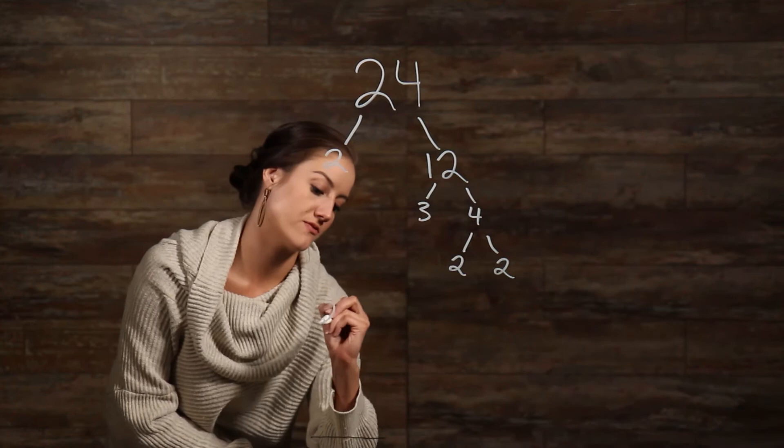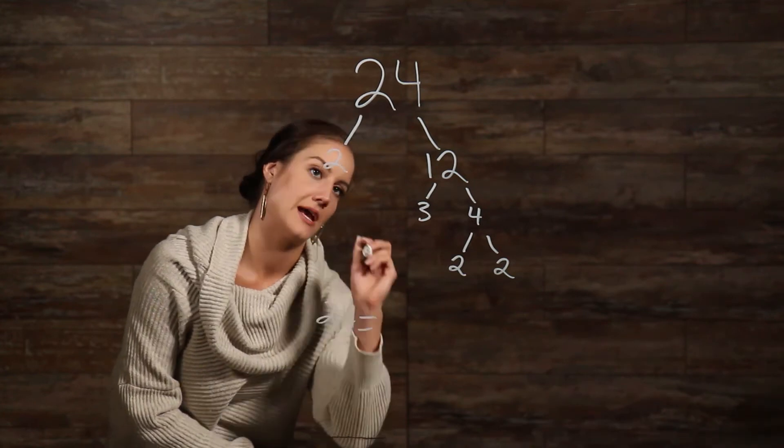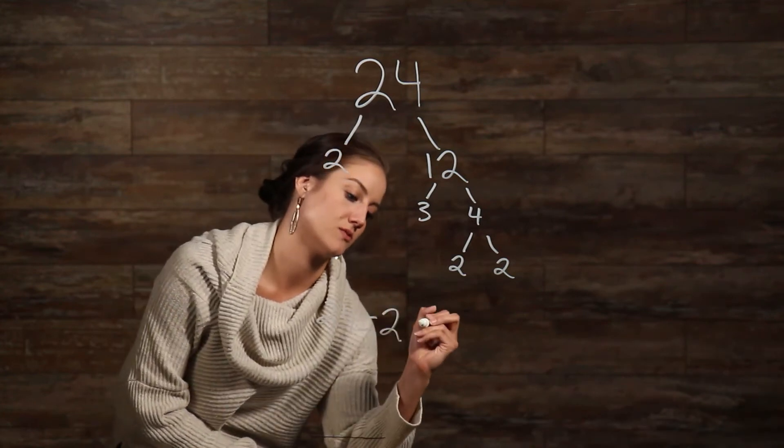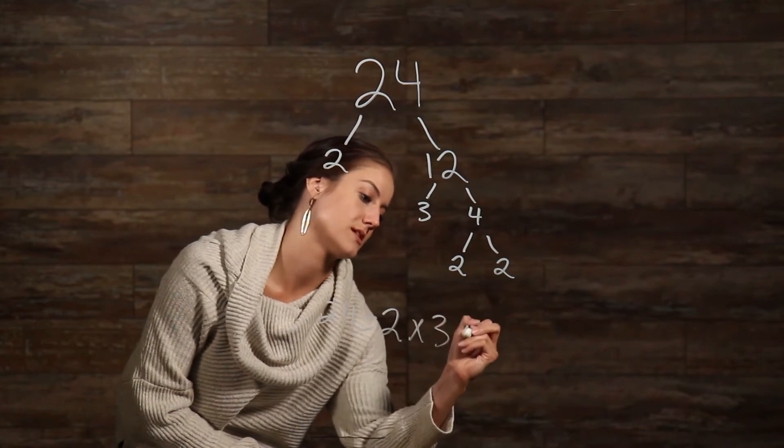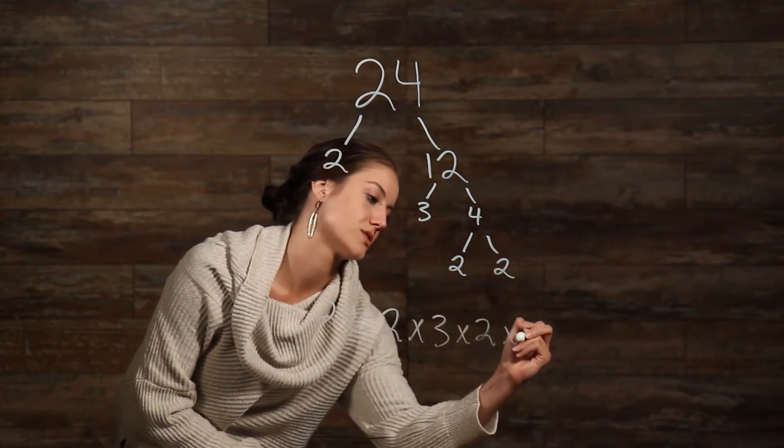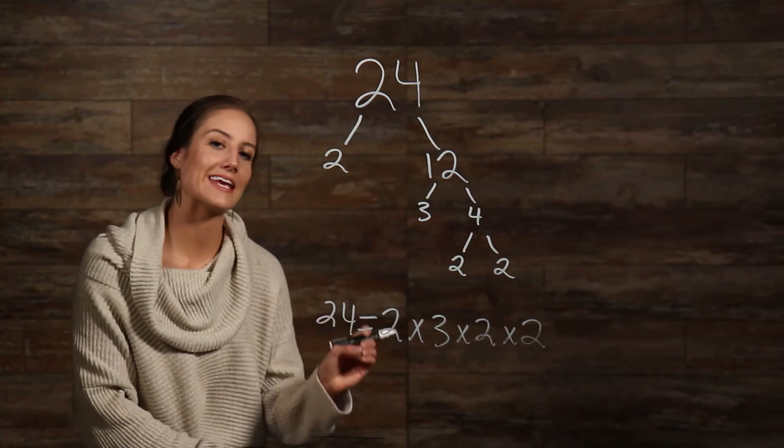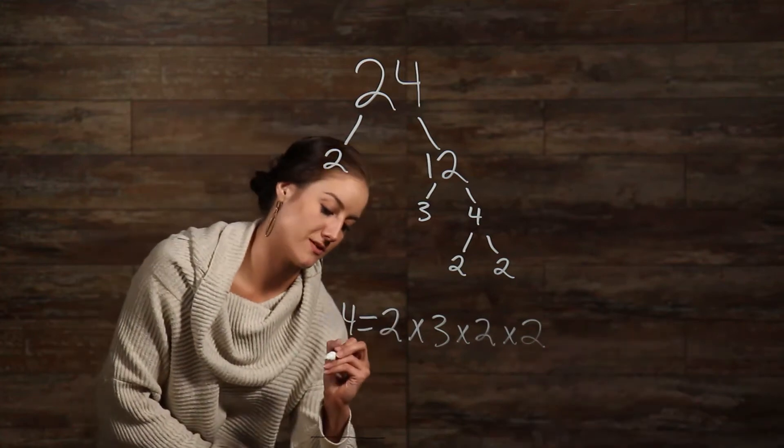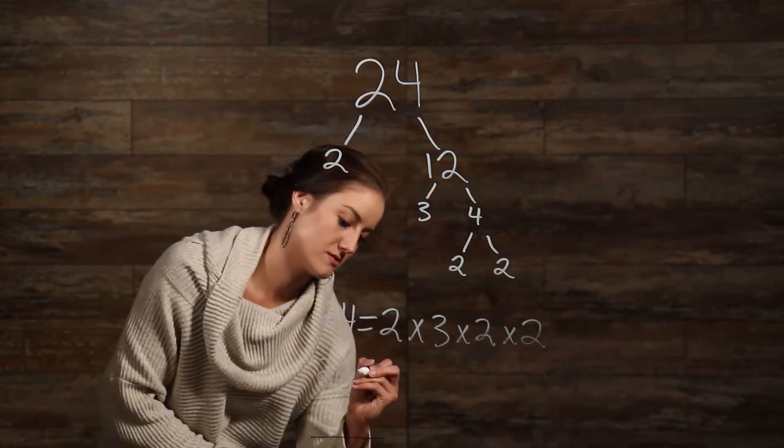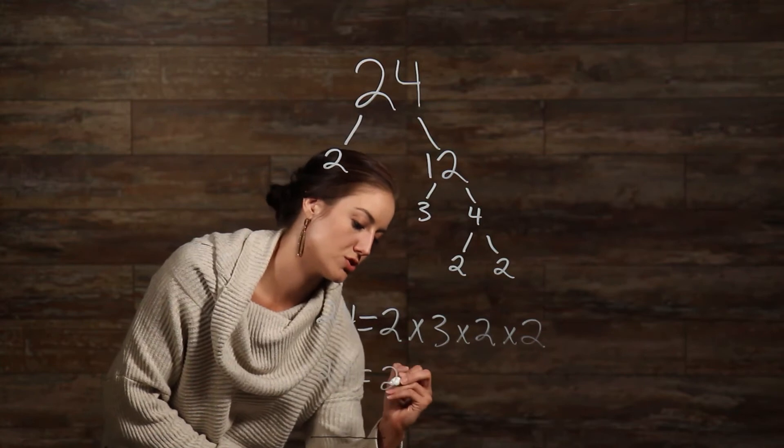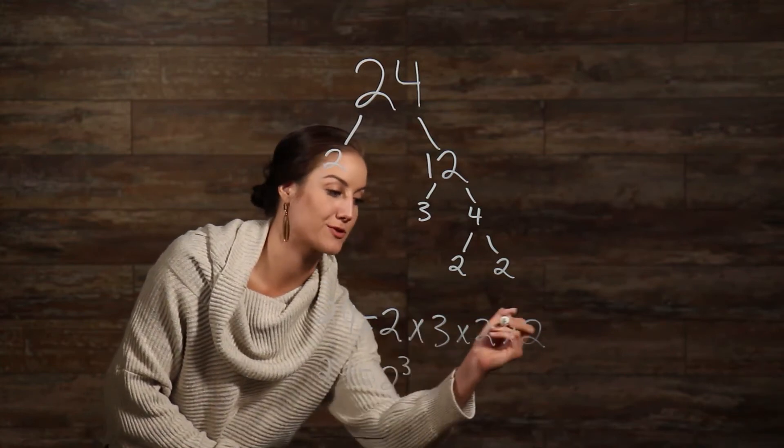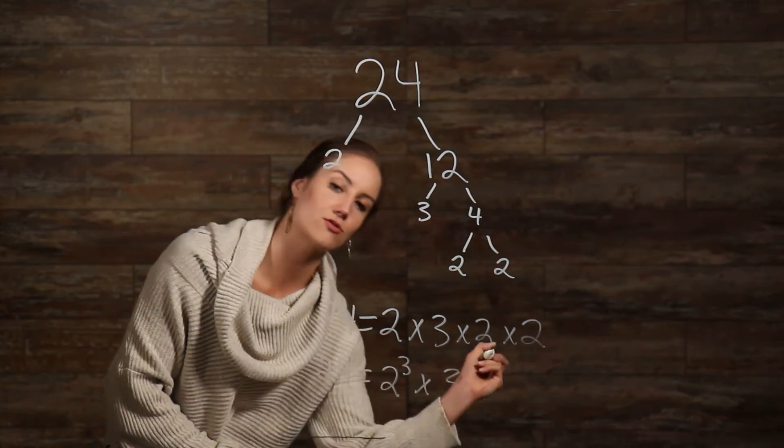What we have is 24 is equal to our first prime number that we used, 2 times 3 times 2 times 2. We can even rewrite this as 24 is equal to 2 to the 3rd, since we have 3 twos here, times 3.